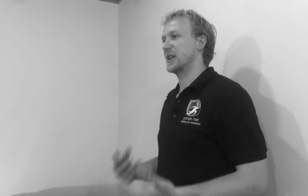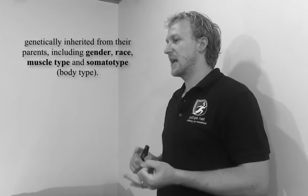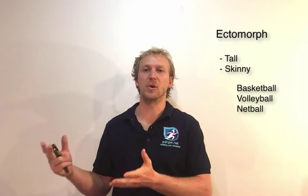We then shift to heredity, which is essentially genetics — genetically inherited aspects of the person that come from their parents, including their gender, race, muscle type, and somatotype. Somatotype is your body type, and there are essentially three different ones. The ectomorph is a tall, skinny person who is more suited to sports like basketball, volleyball, or netball, and might learn those skills faster and perform them at a higher level because of their body type.